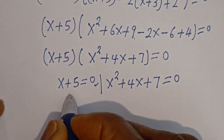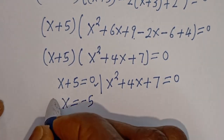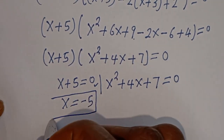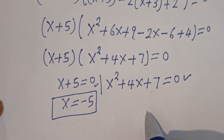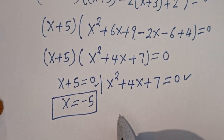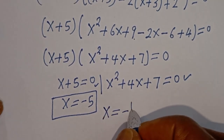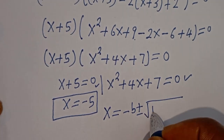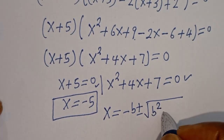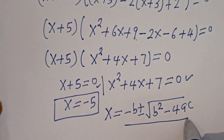From the first case, x is equal to minus 5. From the second case, this is a quadratic equation which can be solved using the quadratic formula.